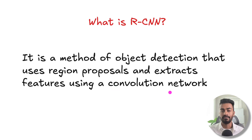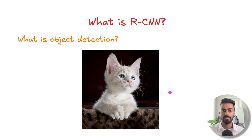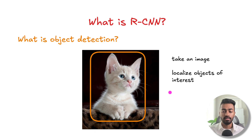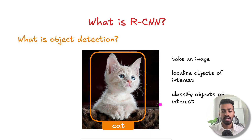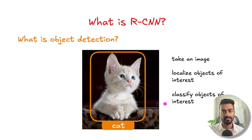There are a lot of components here, so let's go through each of them, starting with object detection. We take an image, we localize the object of interest, and we classify the object of interest. That's object detection.